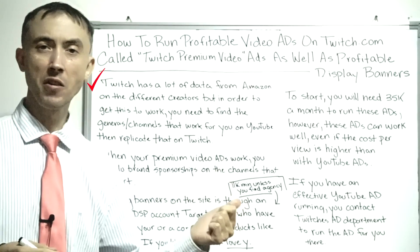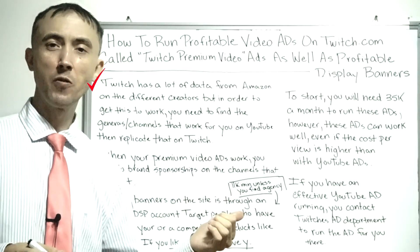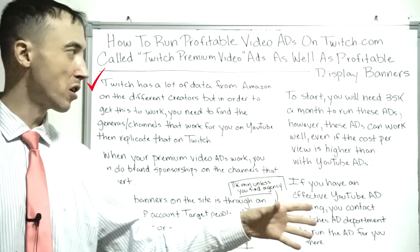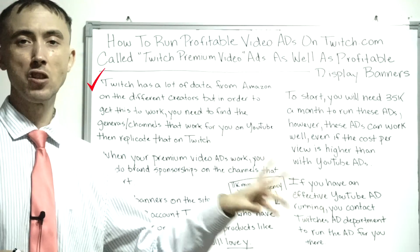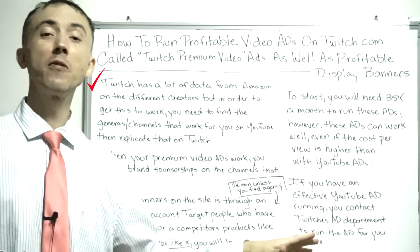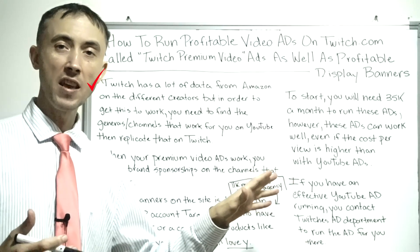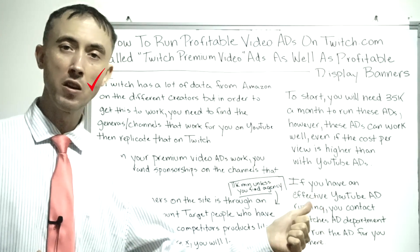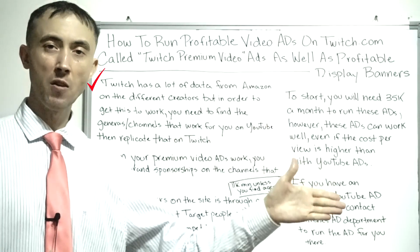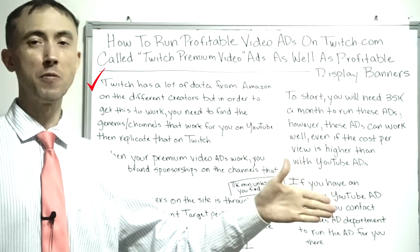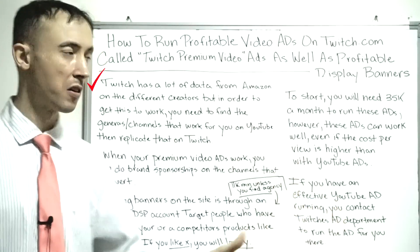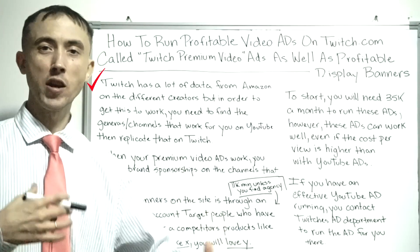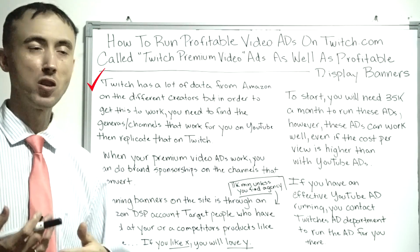You start out with YouTube ads, put together a video ad, and try to see if there's any initial traction. Then when you go to Twitch — where they're running the ads for you — at least you know there's potential for your $35k a month to work. Try out your ads and different channel targeting on YouTube first.